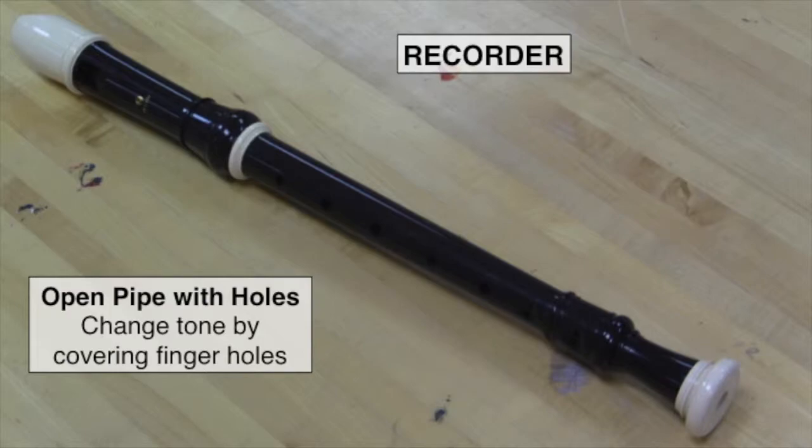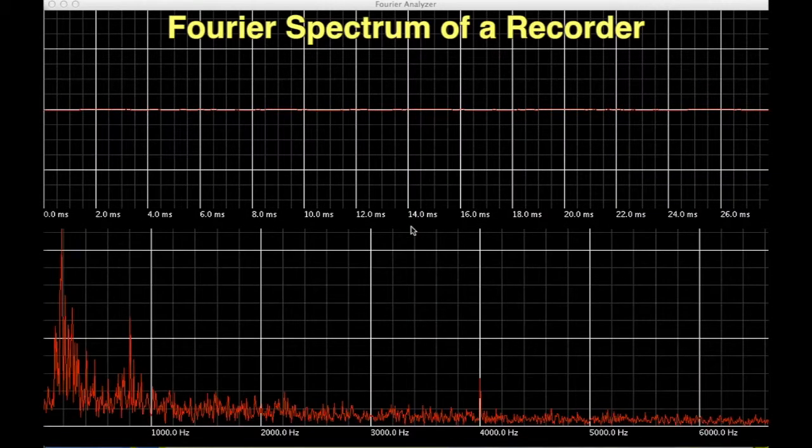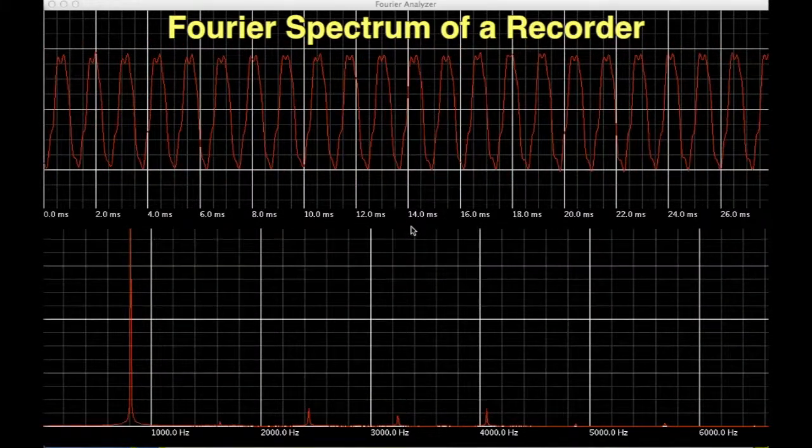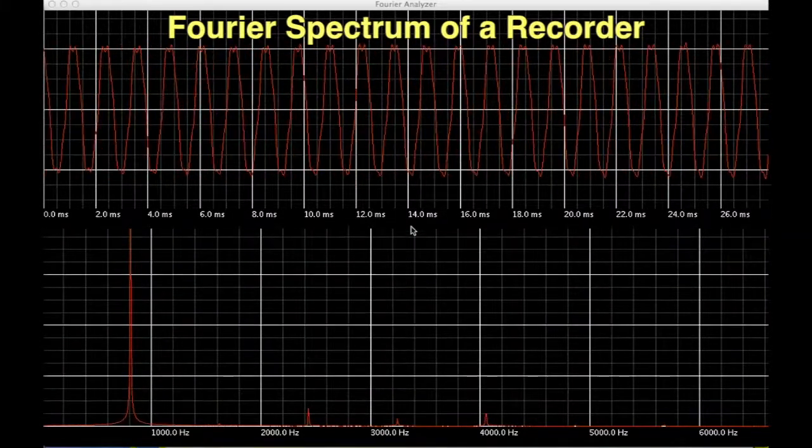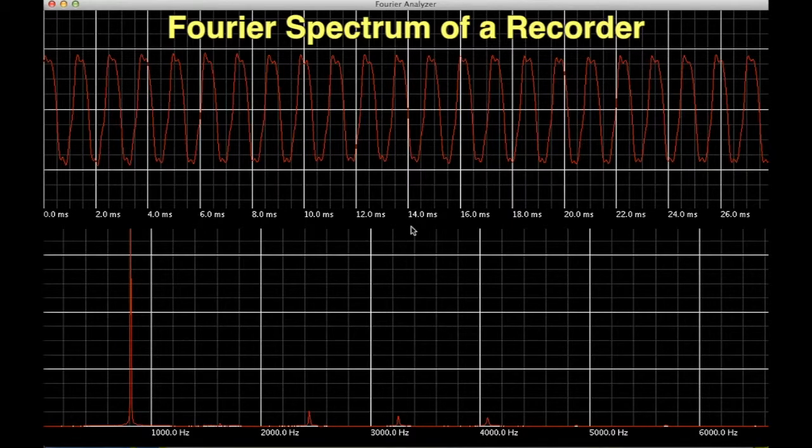A recorder is another example of an instrument that is an open pipe. In this case, we can change the fundamental frequency by covering up finger holes along the length of the pipe. The Fourier spectrum for the recorder has a very strong fundamental frequency compared to the amplitude of the other harmonics. This produces a wave shape that is close to a sine wave.